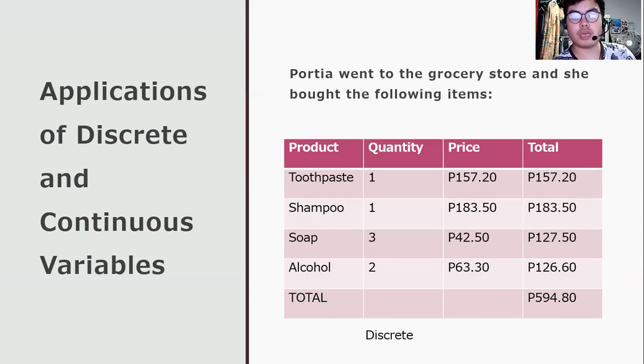Quantity is discrete because it's being described by a whole number. Besides, it shows that the products are being countable. While the price is continuous because it is being described as decimal. The price can be really infinite. It can reach 0.99999999, and that's why it's continuous.